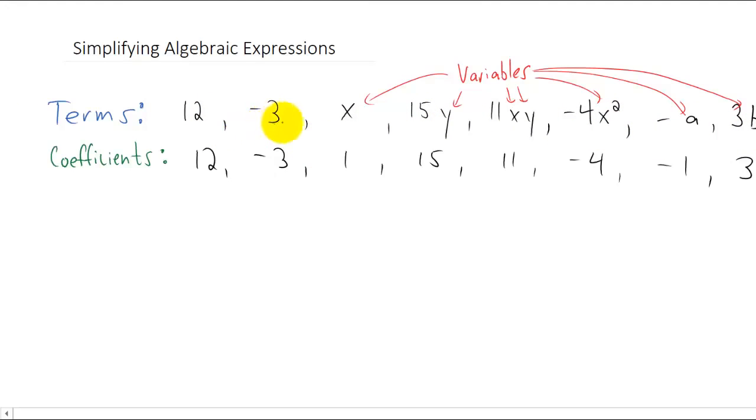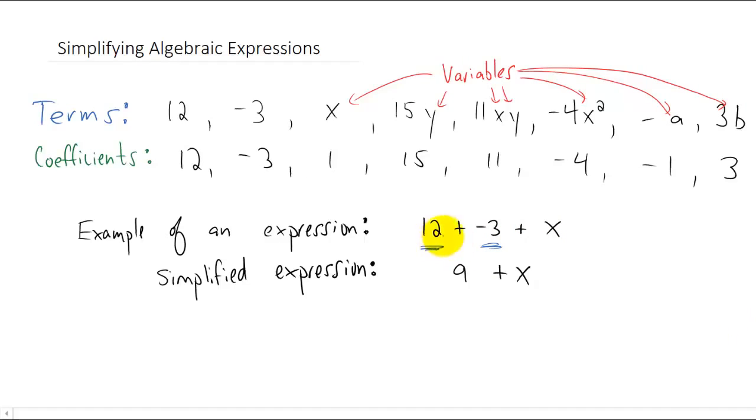One thing that we can do with these terms is we can add one or more of them together to form an expression. So, just as an example, I took the first three terms and I added them all together, and that there is called an expression. Well, you know something about this expression already. You've already learned that you can take twelve and you can add twelve plus negative three. You know how to do that. You know that twelve plus negative three is nine, so why would we write it this way when we know that it can be simplified?